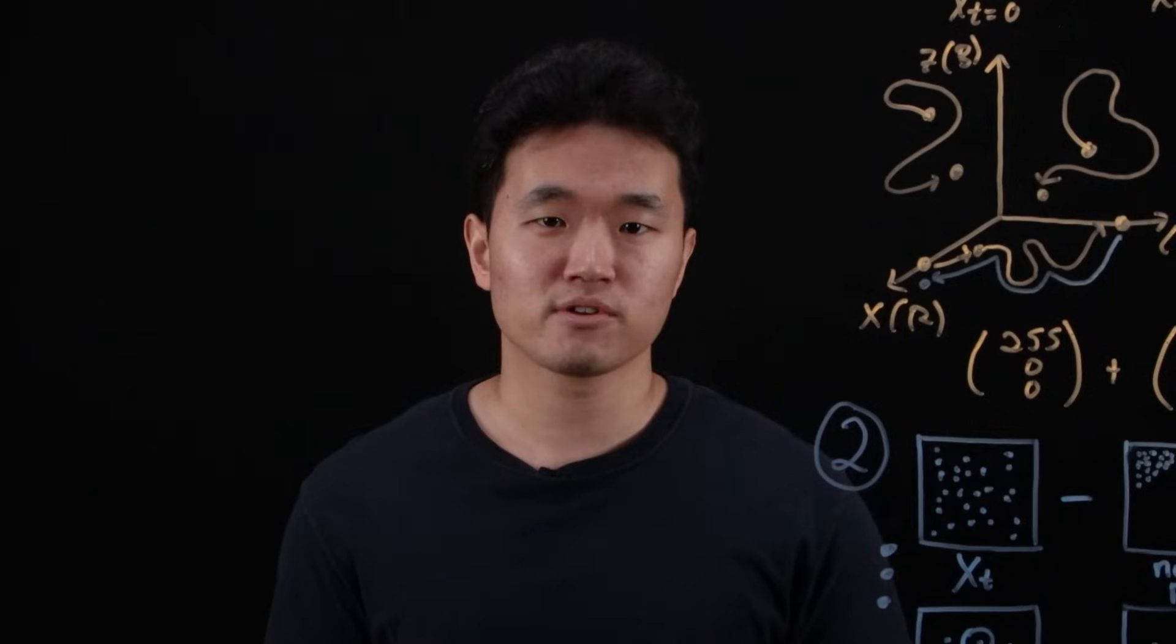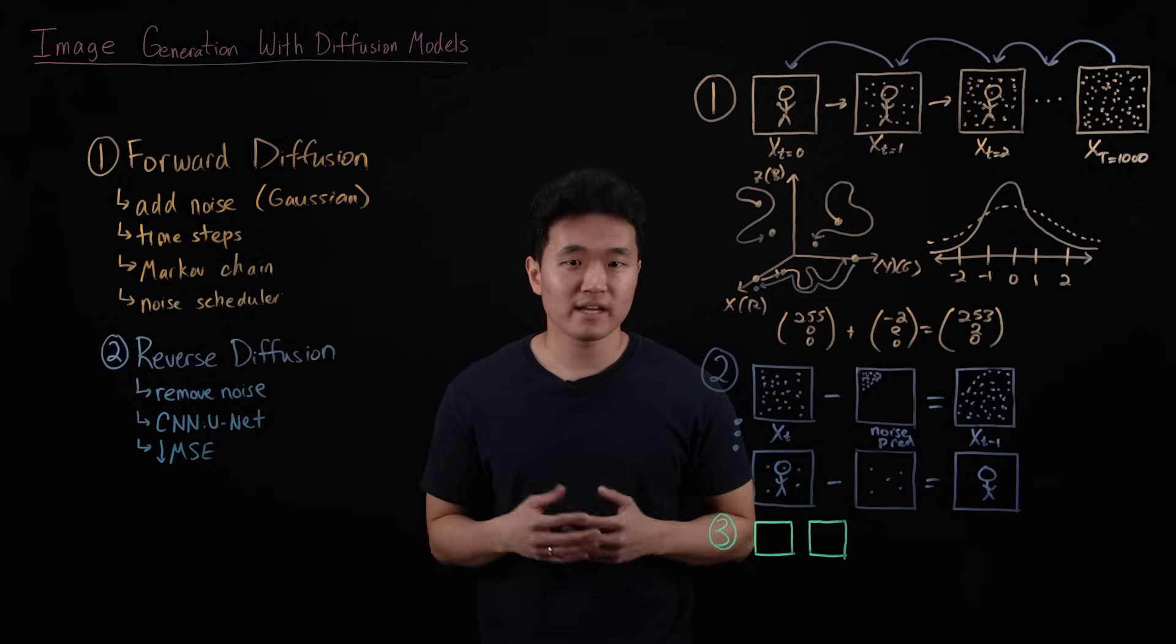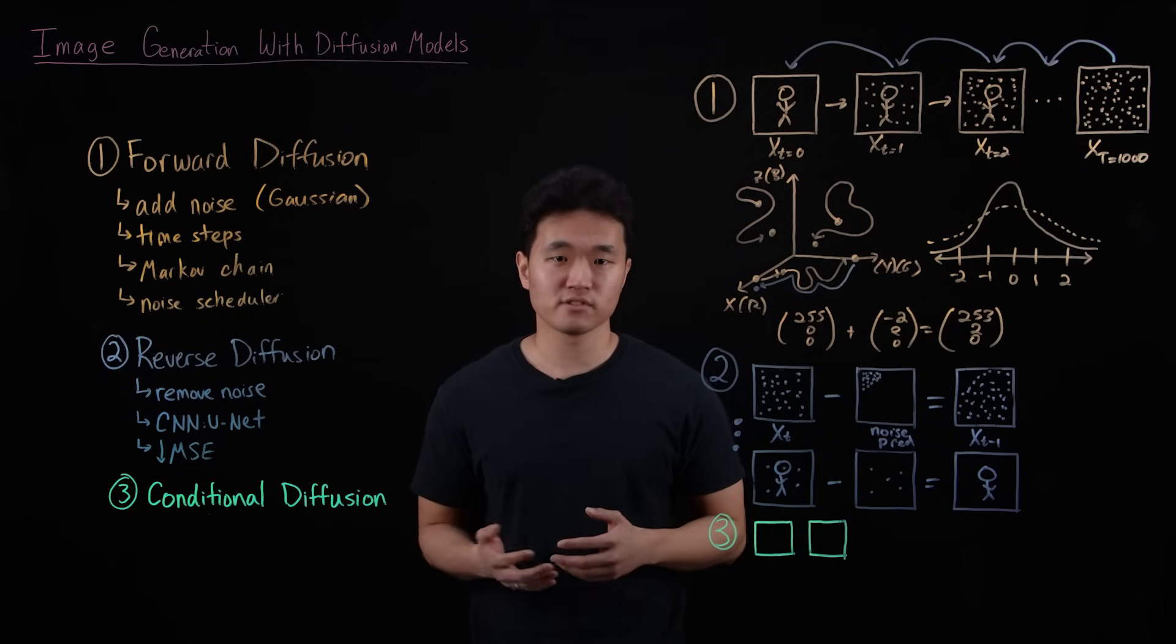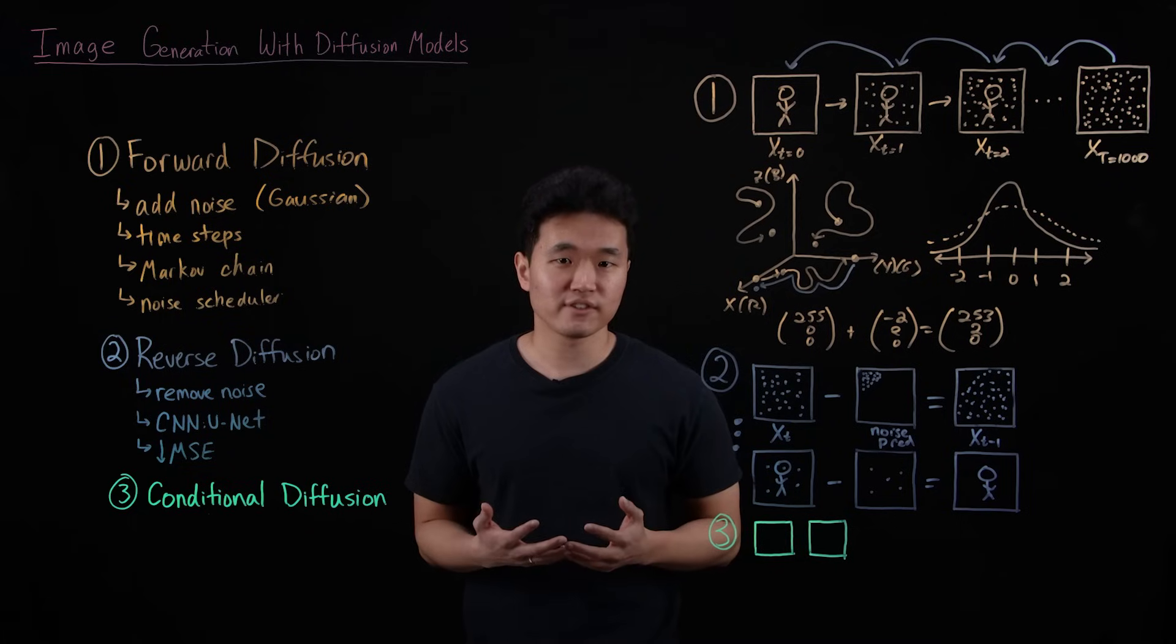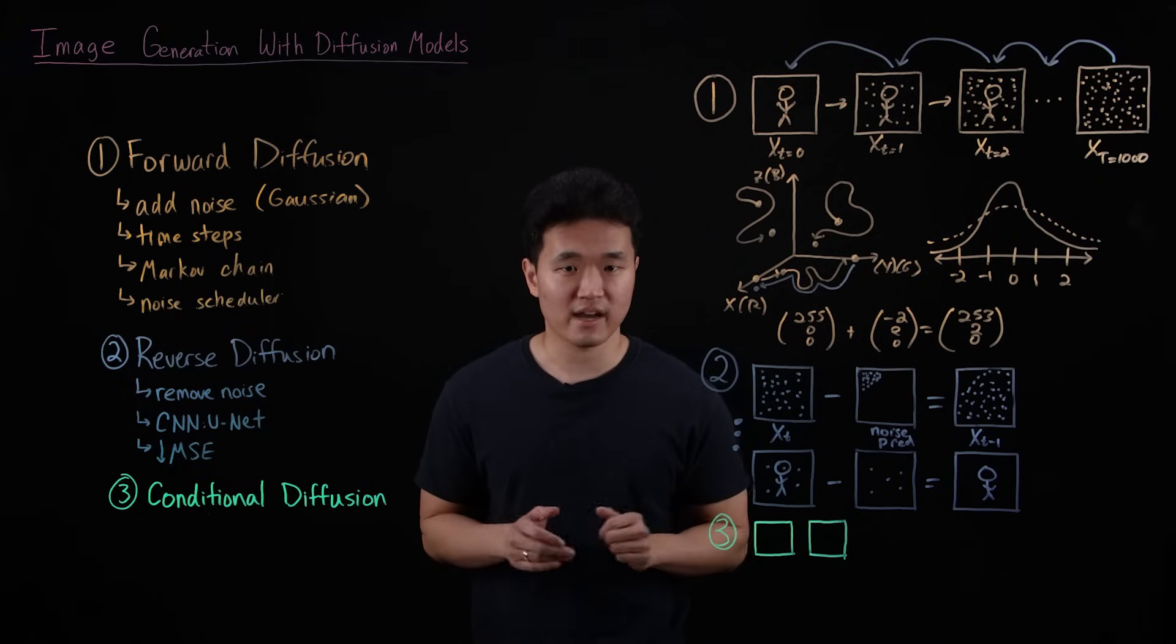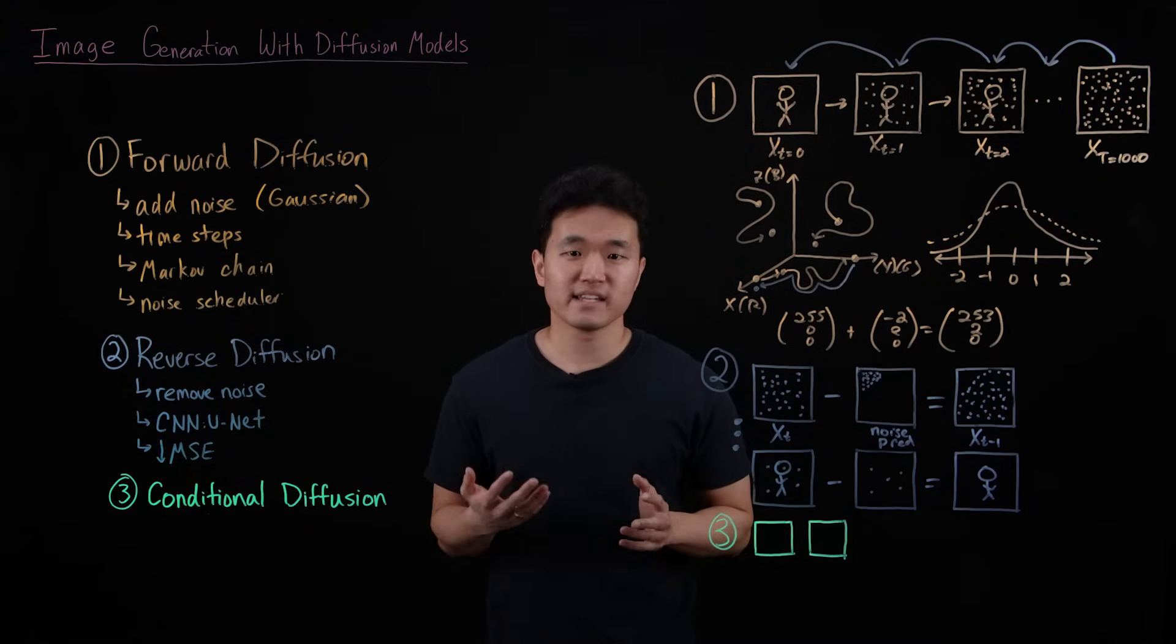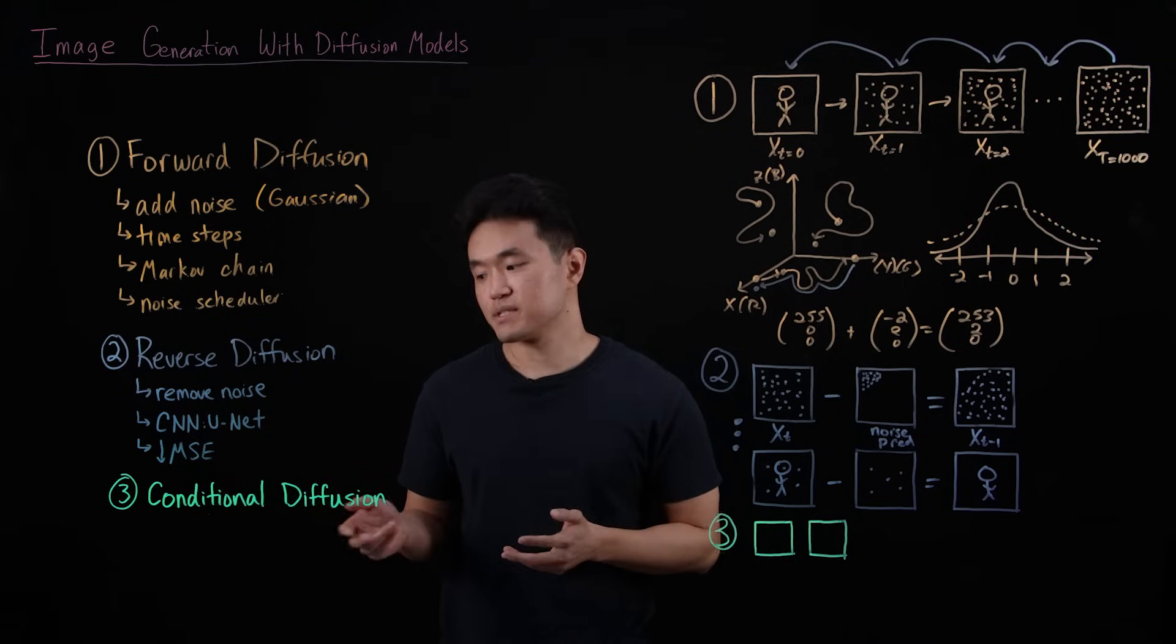So now that we've covered forward and reverse diffusion, it's time to introduce text into the picture by introducing a new concept called conditional diffusion or guided diffusion. Up to this point, I've been describing unconditional diffusion because the image generation was done without any influence from outside factors. On the other hand, with conditional diffusion, the process will be guided by or conditioned on some text prompt.